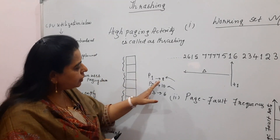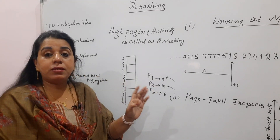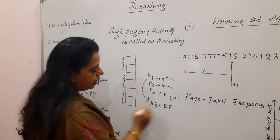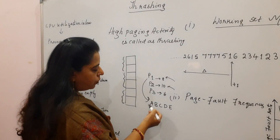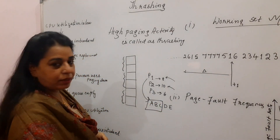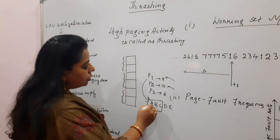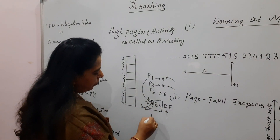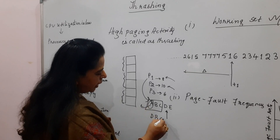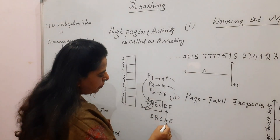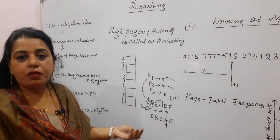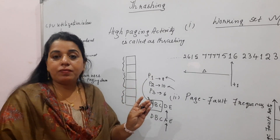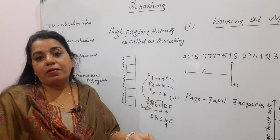Moreover, if all these pages are active pages — meaning, for example, P1 has pages A, B, C, D, E and only A, B, C are in memory while D and E are on the hard disk — when the CPU needs D, it takes out A and places D in memory. But immediately the CPU demands A again, which was just swapped out. Those pages are called active pages. If all pages of the processes are active, page faults will happen frequently.